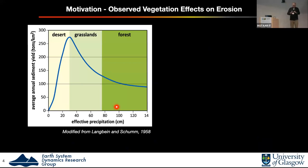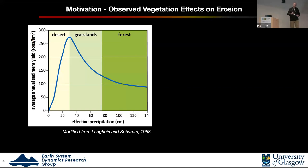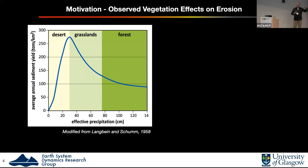There's seminal work by Langbein and Schumm in the 1950s. What they found is that if you look at different rivers around the world and the effective precipitation versus sediment yield — or the erosion rate of mountain ranges — what you see is this kind of bidirectional, nonlinear response. They attributed this to different ecosystems, whether you're in deserts, grasslands, or forests. Pretty clear: more vegetation, less erosion.